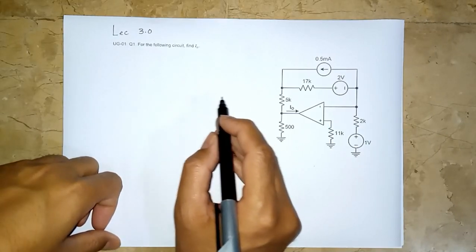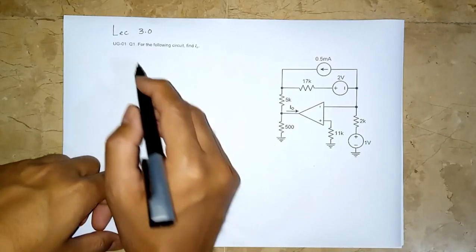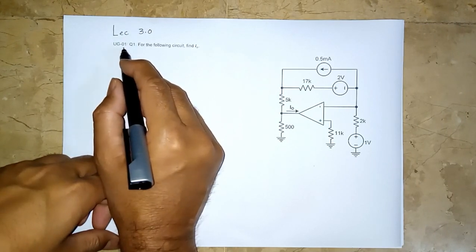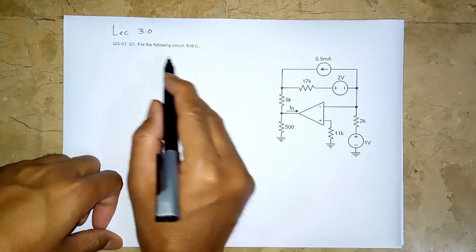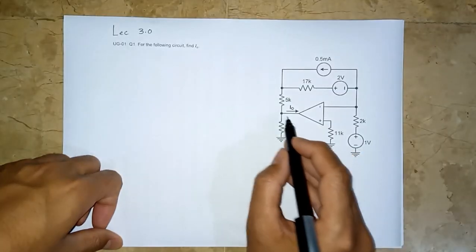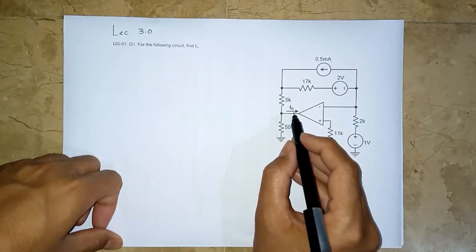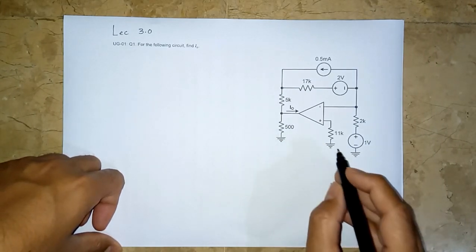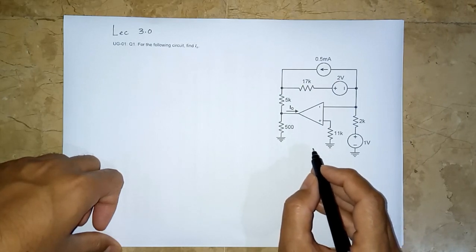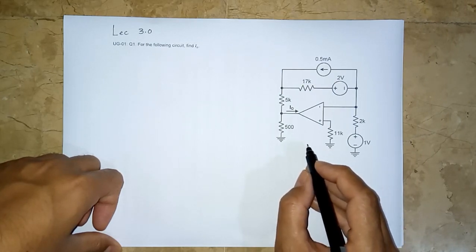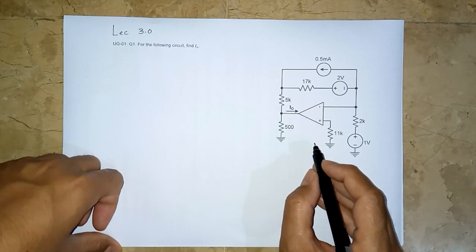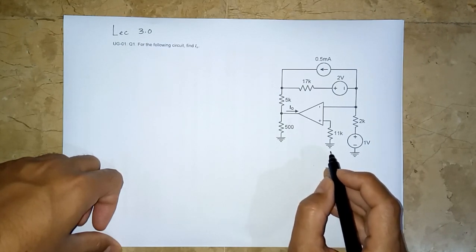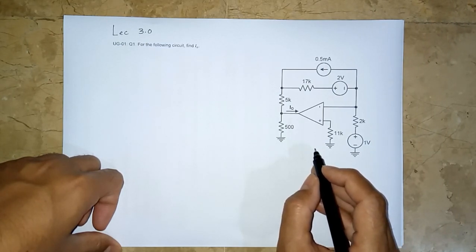Let us look at this problem, the ungraded 0.1. We had this one question where we have to find I_O. This was given to you as an exercise. Very few of you submitted the video of the attempt. Anyway, let us solve this and please have a look at how you are supposed to solve op-amp questions.